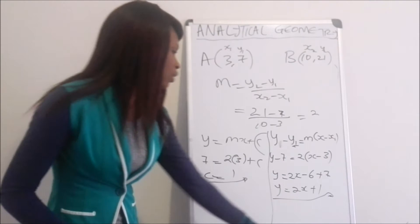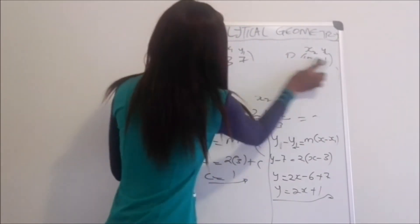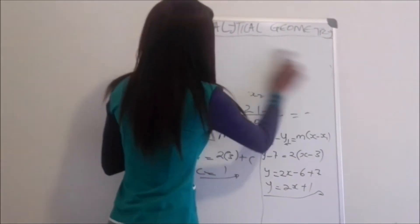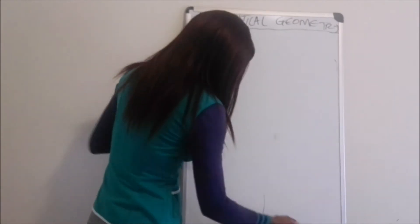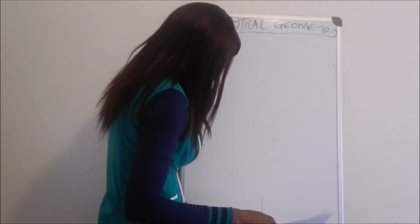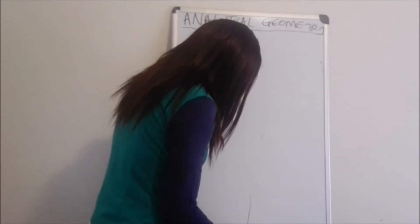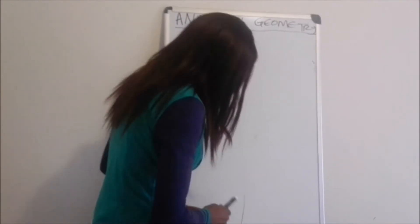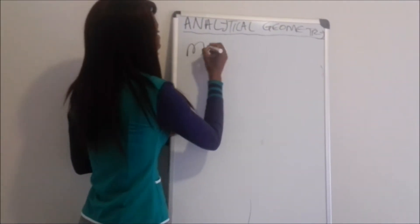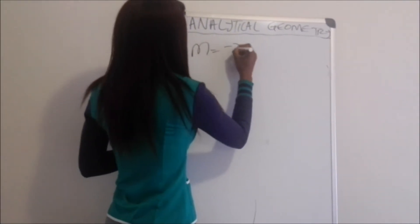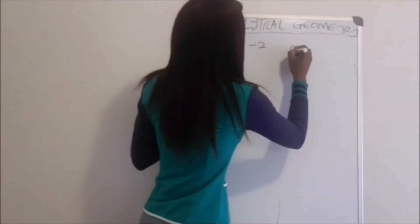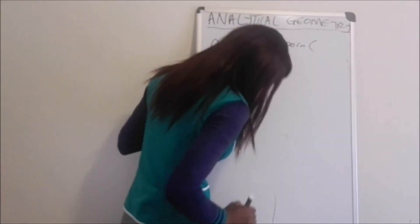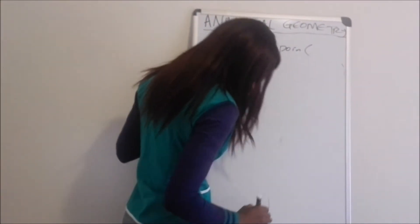Let's look at another question and see how to find an equation of a straight line. Here we are given the gradient m = −2 and another point on the graph which is (3, 8).